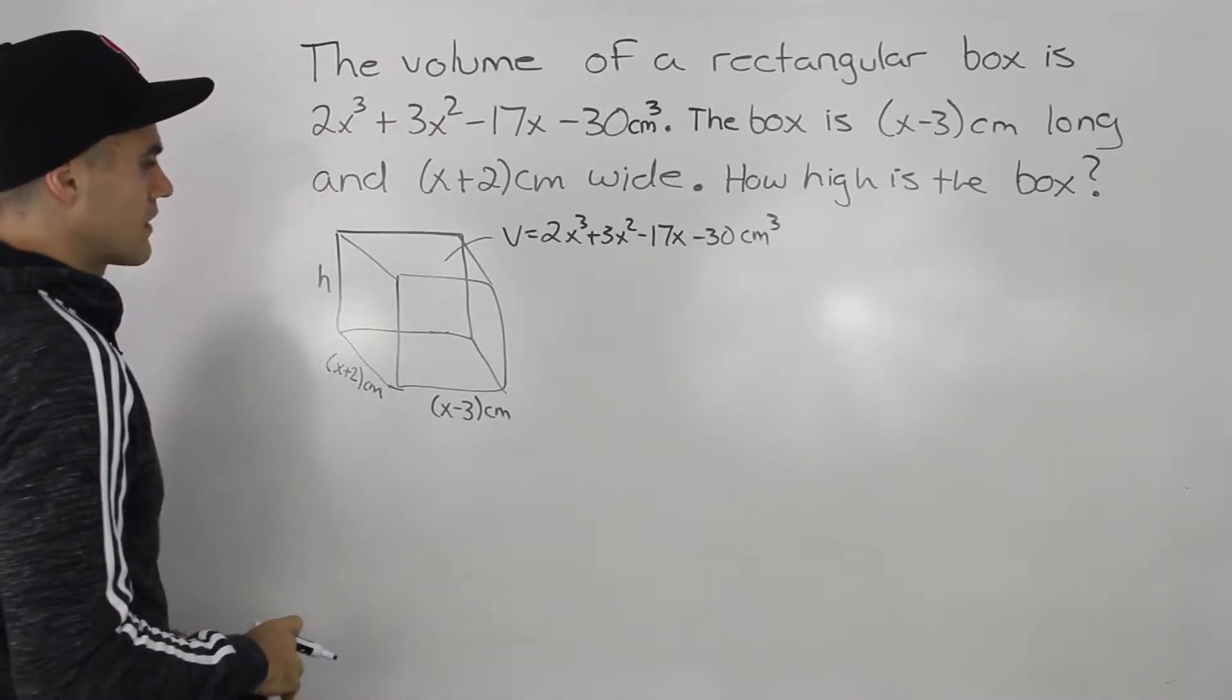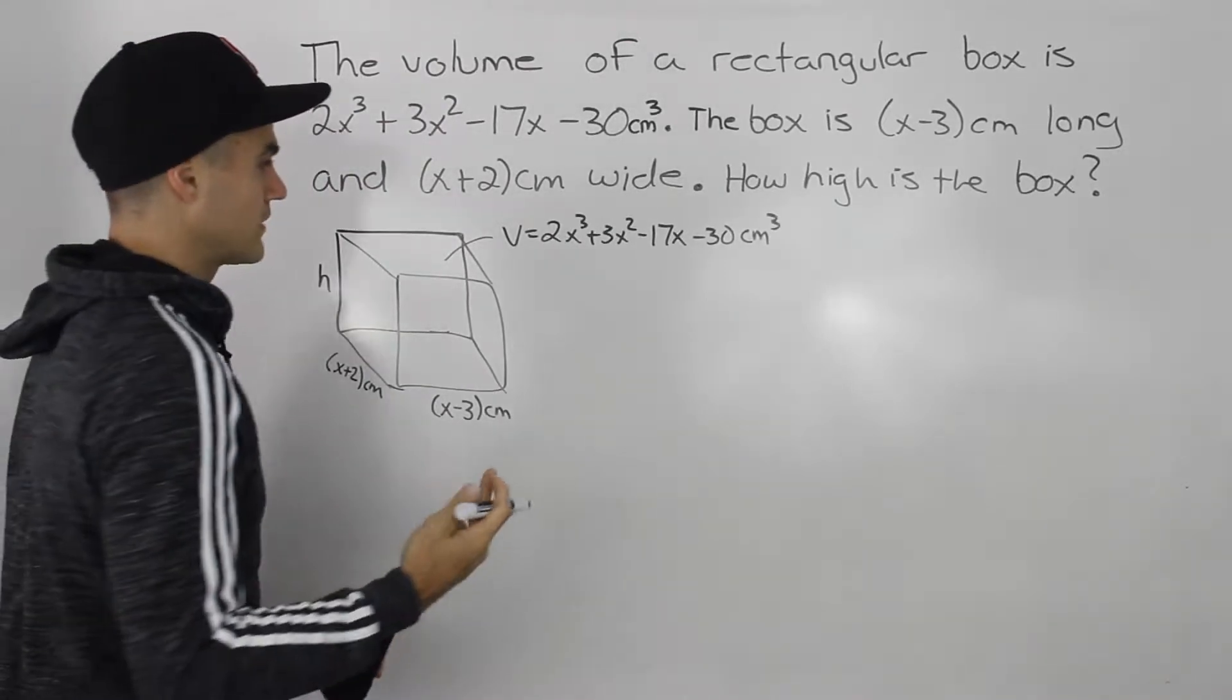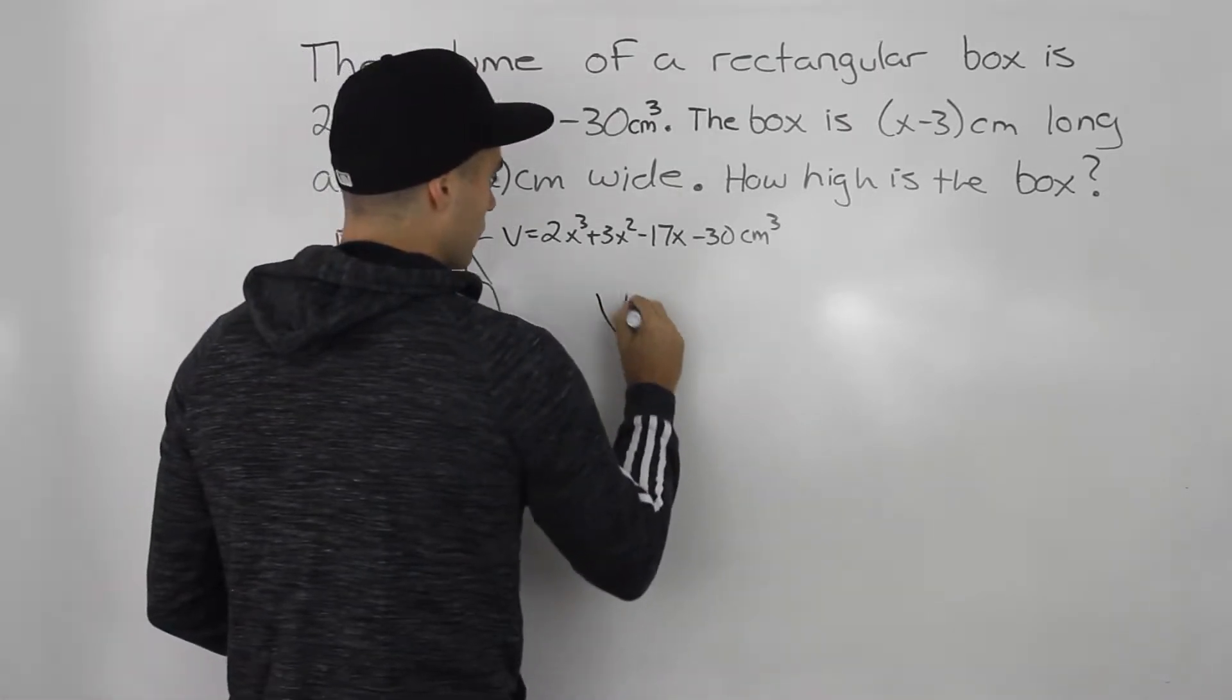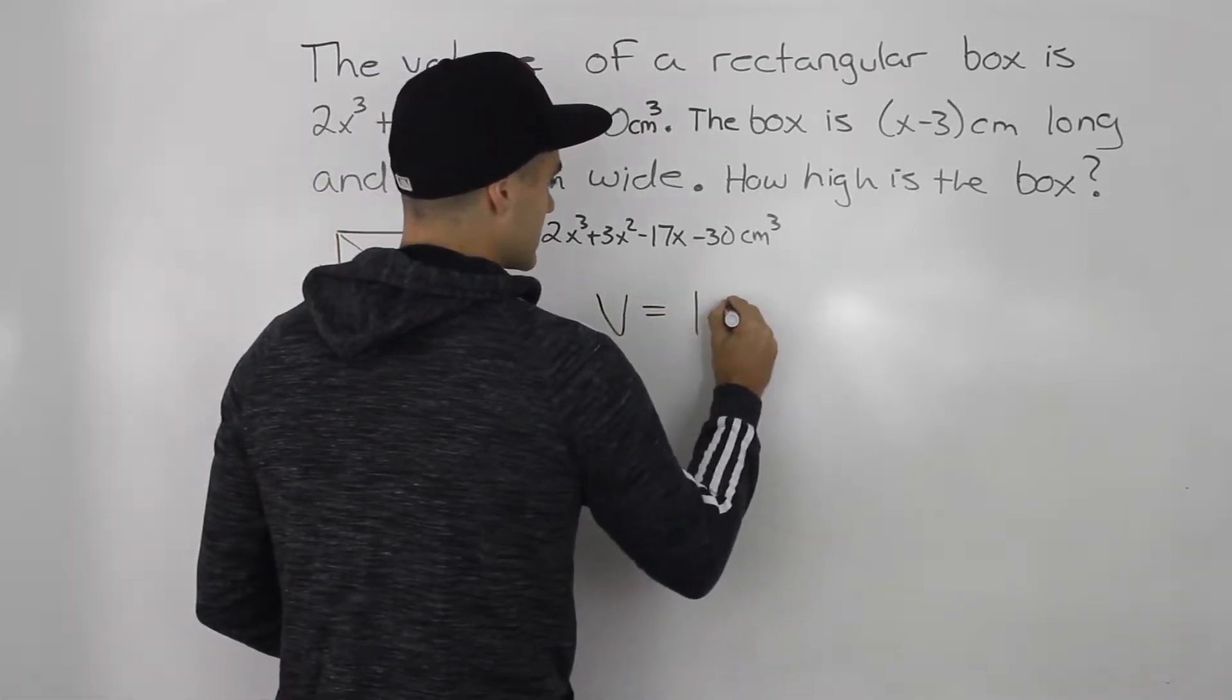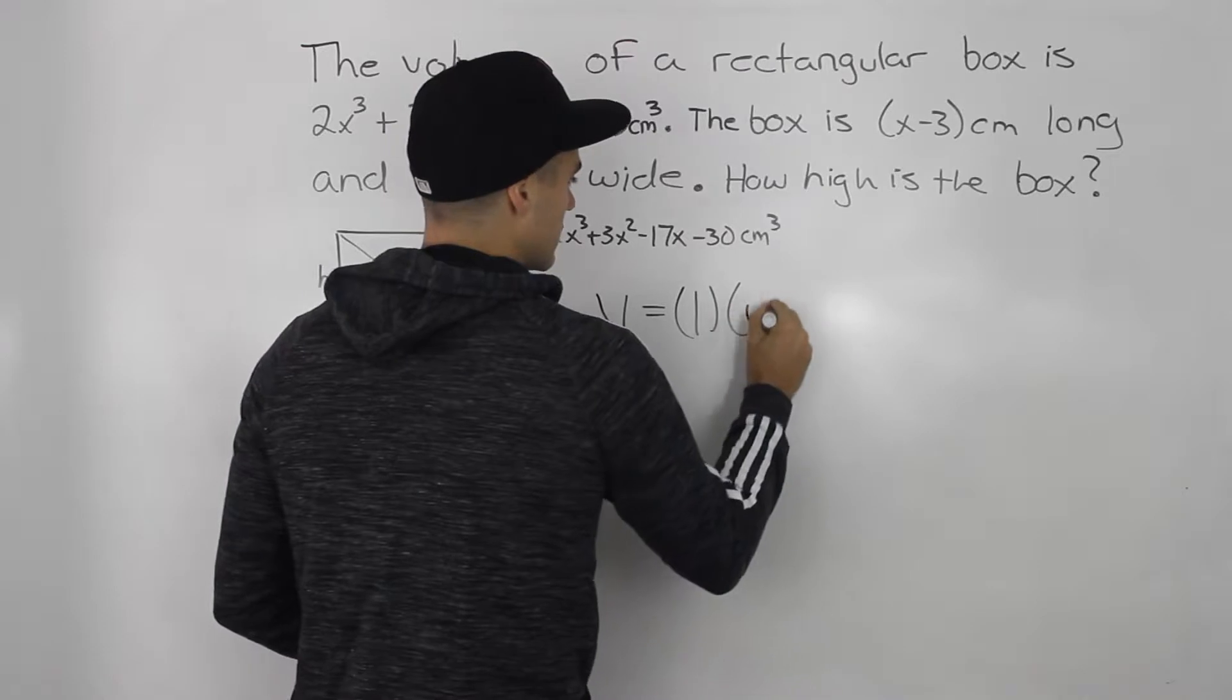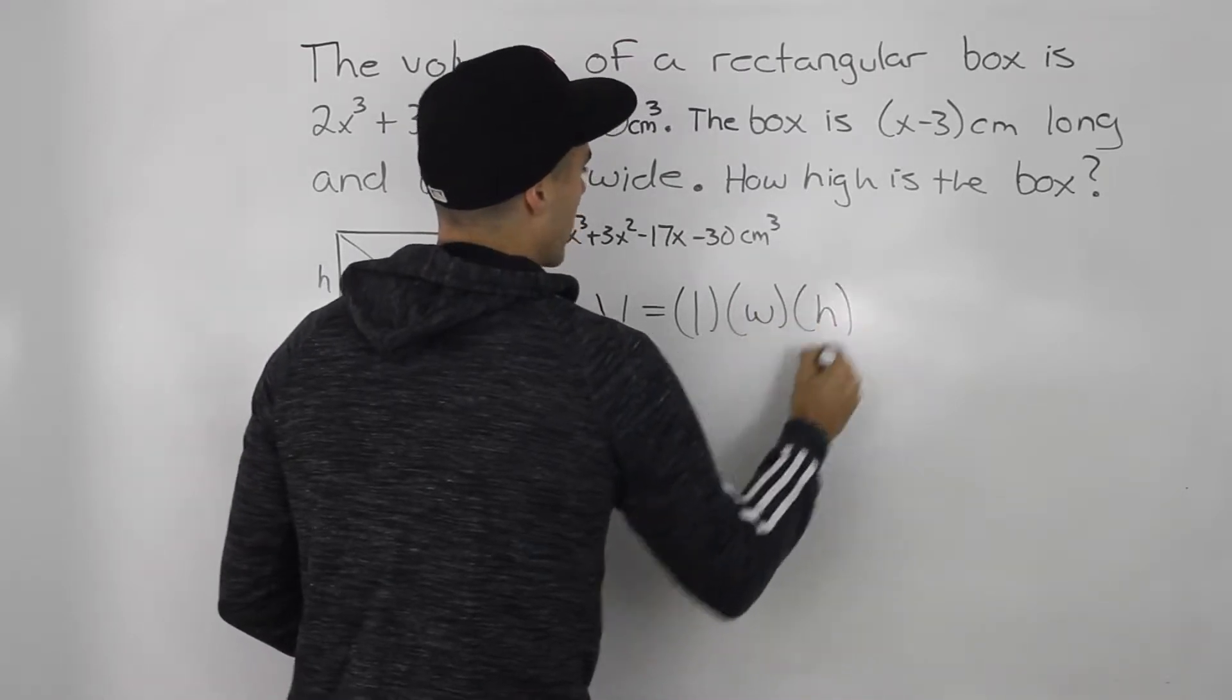So we know that the volume of a rectangular box is what? Volume is length times width times height. Let's put these in brackets here.